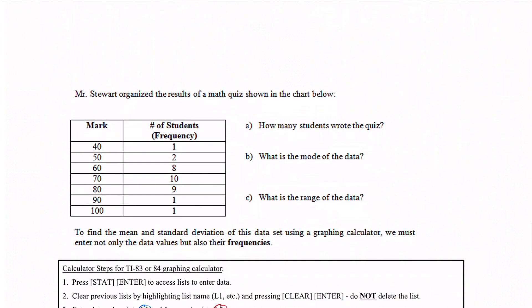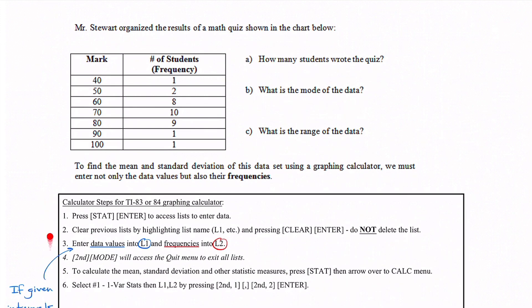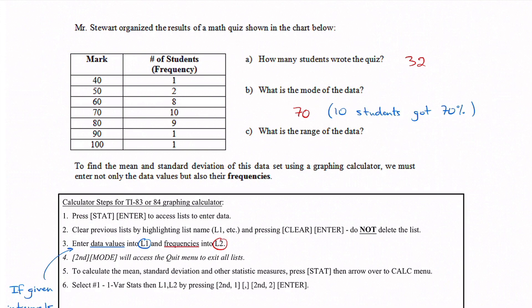We are now on to our last example. Mr. Stewart organized the results of a math quiz in a chart with marks of 40, 50, 60, up to 100, and a frequency column showing how many students got each mark. Part A asks how many students wrote the quiz — adding all the frequencies gives 32 students. Part B asks for the mode: the value with the highest frequency. There were 10 students who got 70%, so the mode is 70%.